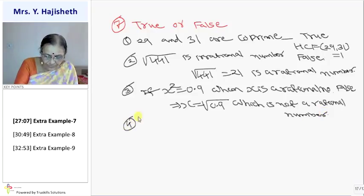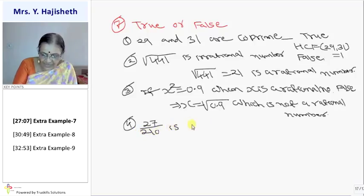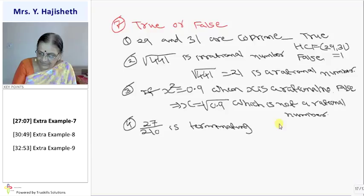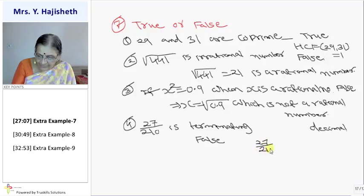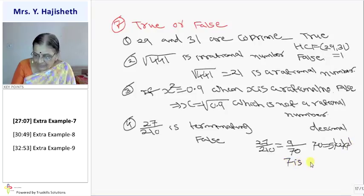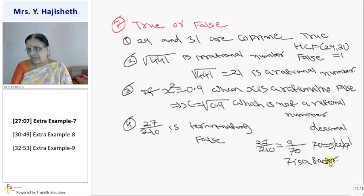Now fourth. 27 by 2110. Let me reduce. Each terminating decimal. False. This is a false statement. Because 27 by 2110. Can be, you can reduce like 9 by 70. And 70 can be written as 5 raised to 1 into 2 raised to 1 into 7 raised to 1. So 7 is one of the factors. And 7 is a factor of q, it is not terminating.